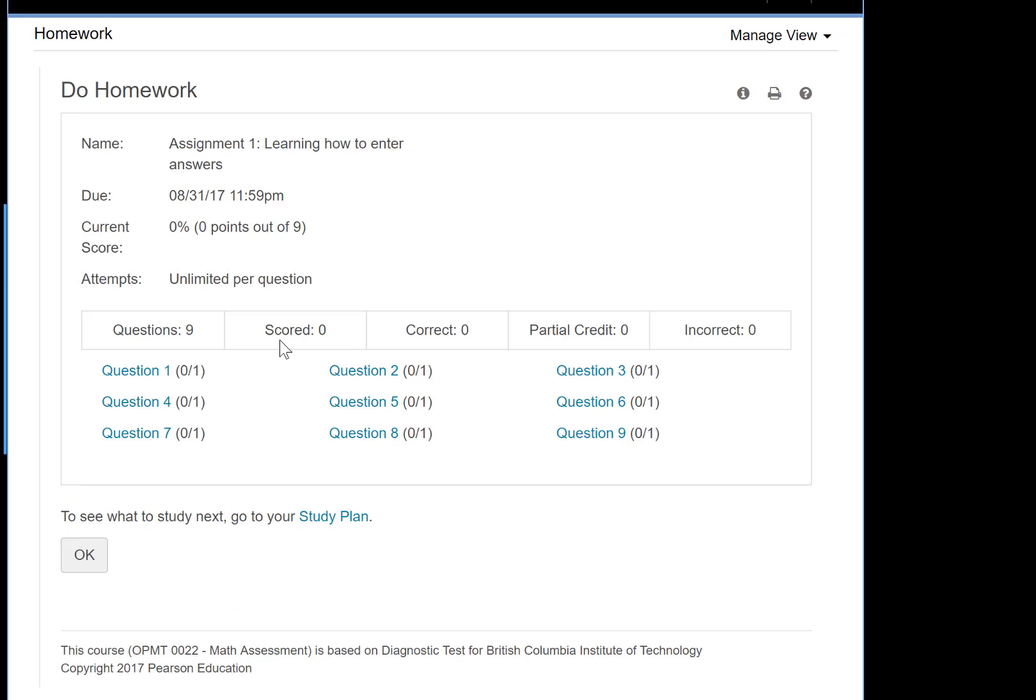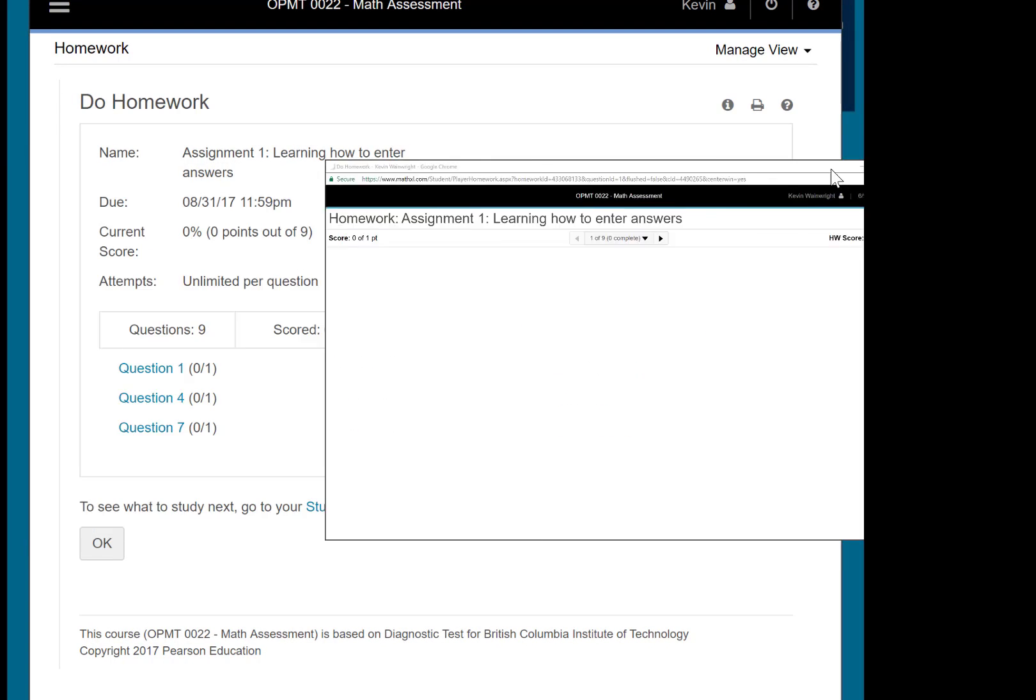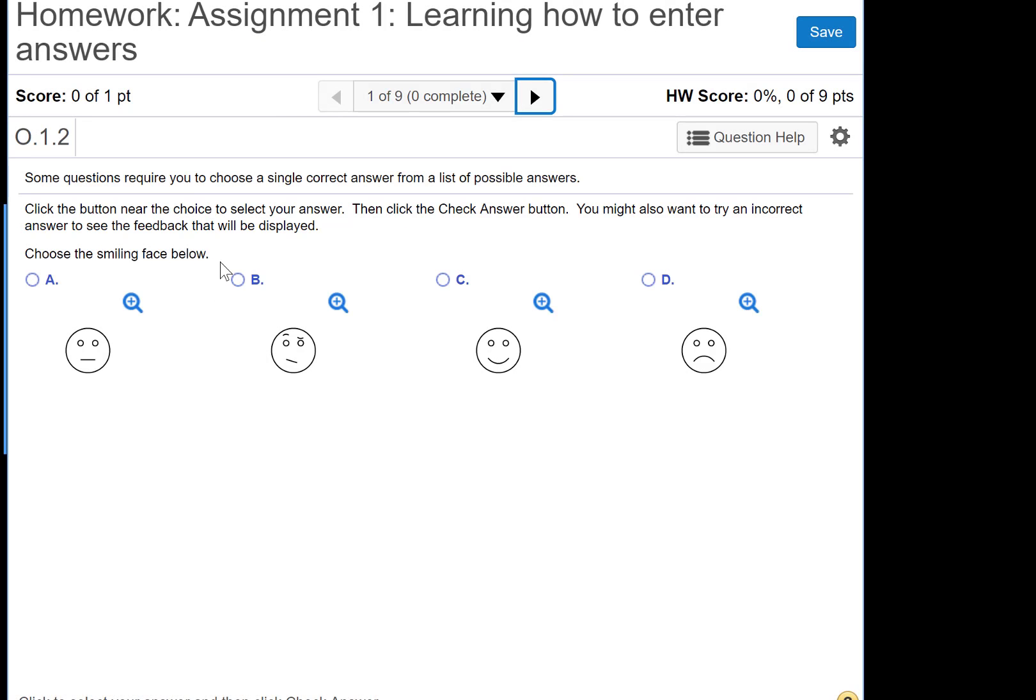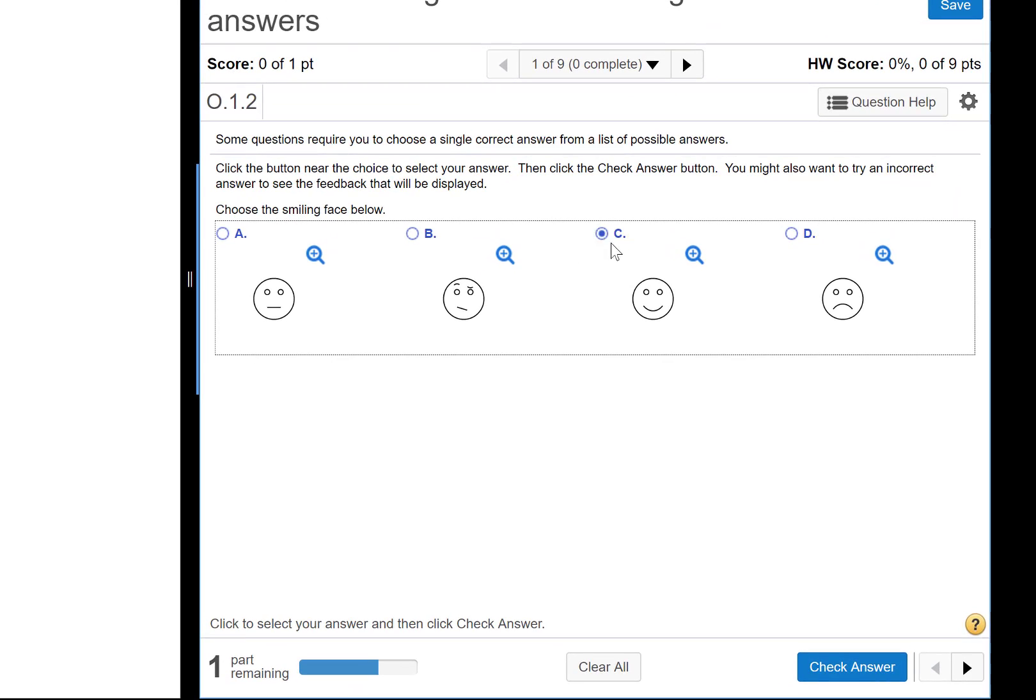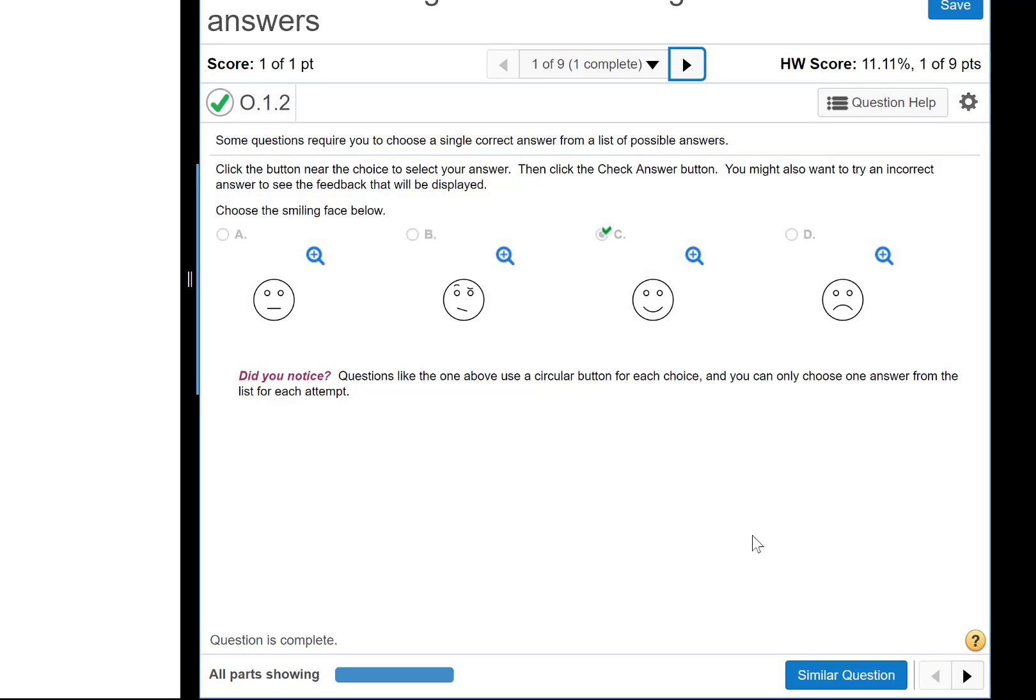Assignment number one here. Starting, let's just start with question number one. First question is a multiple choice one. This is just practicing how to enter answers in MyMathLab. First thing asks you to choose a smiling face. So that's C. To choose C, you click on the bubble beside there. And then you'll notice that this turns blue, this bottom answer, check answer. Well done. To move on to the next question, you don't want to click similar question here. You just click the arrow and move on to the next one.